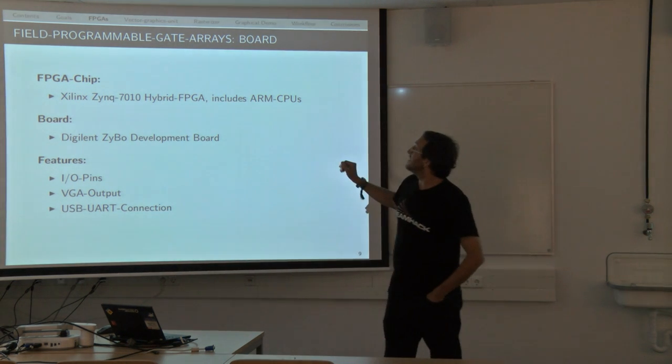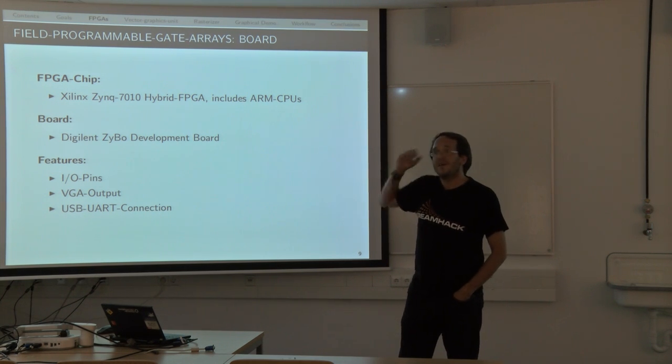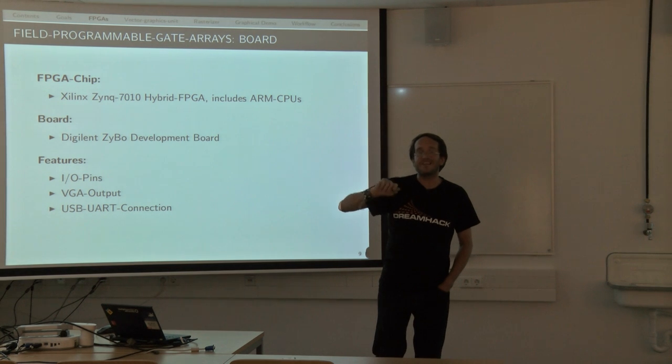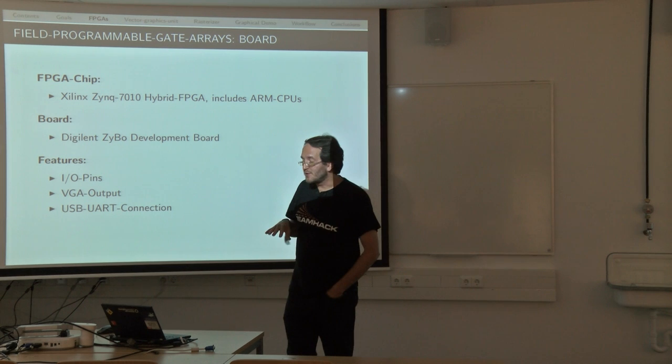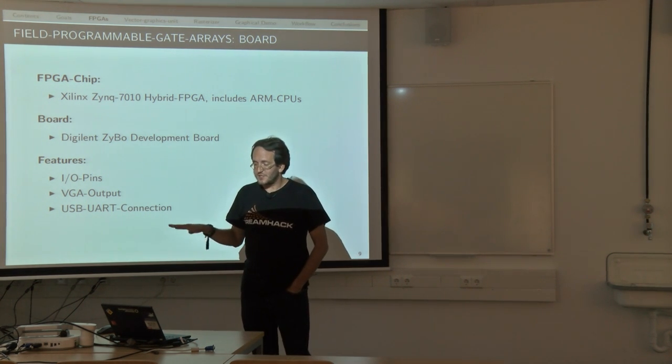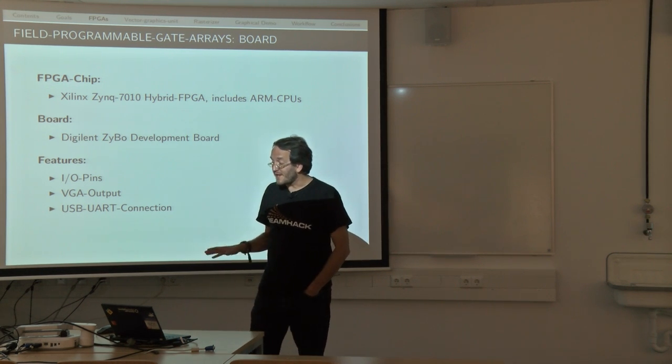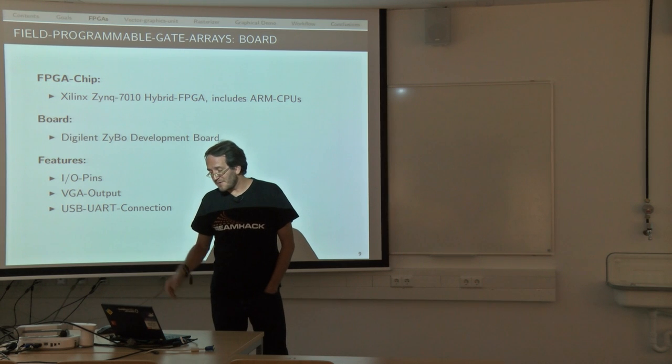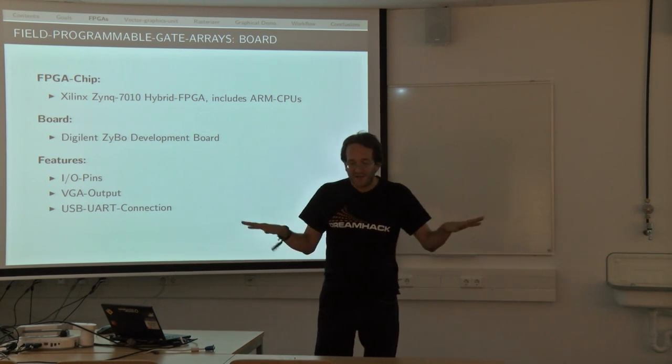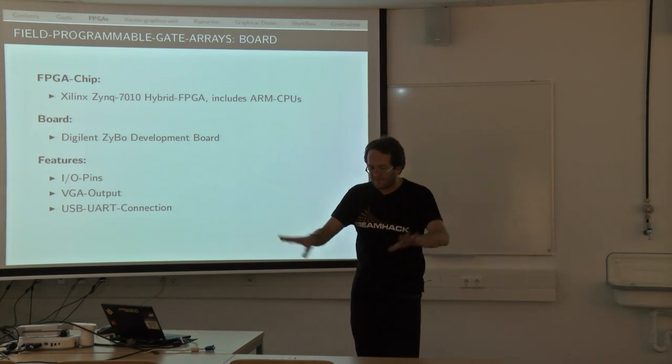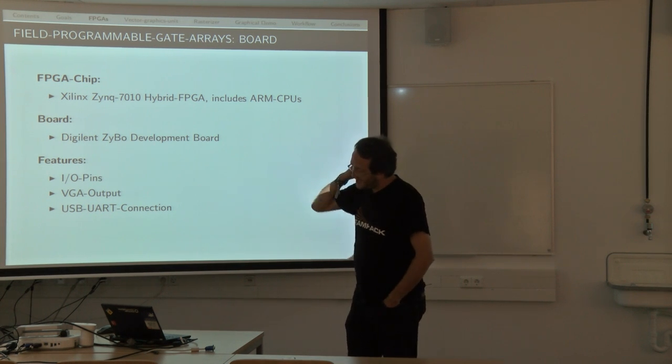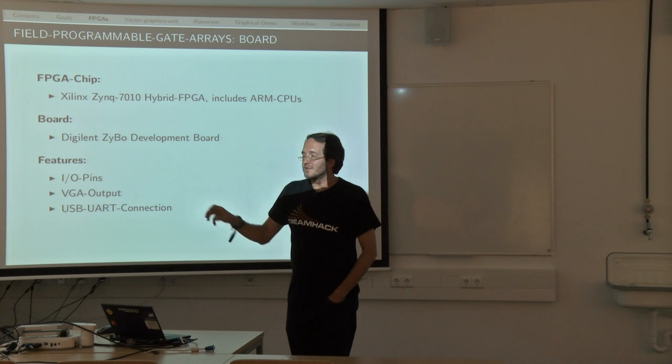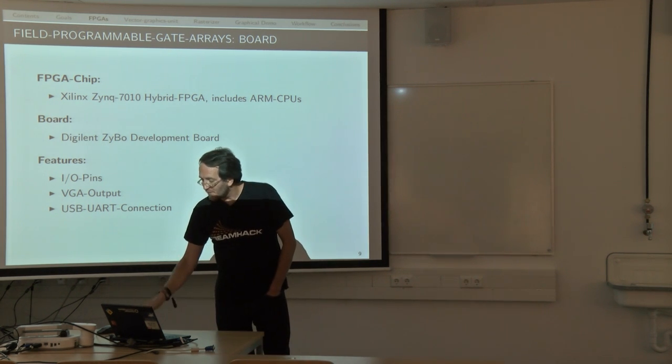The chip I'm using is the Zynq 7010. It's a Xilinx chip and it's called a hybrid FPGA because it also has two ARM CPU cores directly inside the chip. That becomes handy because we can run Linux on it, and there is a distribution from Xilinx made for these chips. That is very handy for controlling tasks. The chip is on a Digilent Zybo board, a development board. The main features why I took this board is it has enough I/O pins, mainly output pins for connections to displays as you see here. VGA output and the Linux system running on it. We need a USB UART connection for getting onto the Linux system.